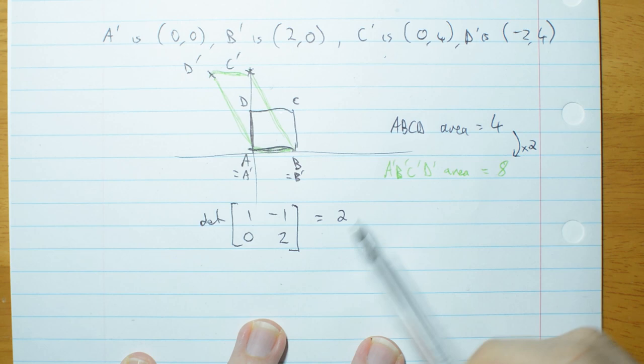That tells you, the determinant of that matrix tells you how much the area of a shape will change.